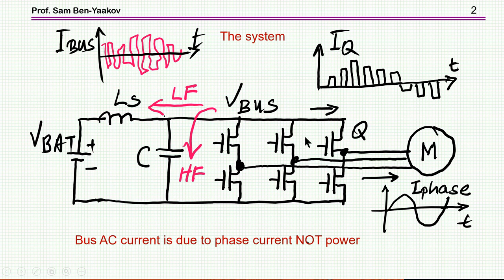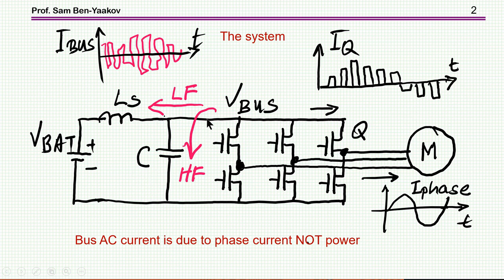As these transistors are switching and being modulated, the current of a given transistor will look something of this nature. The average is a sinusoidal waveform — this is the current of the phase — while the transistor itself is turning on and off. The problem I'm addressing is how to choose the capacitors for carrying the ripple current of the bus.